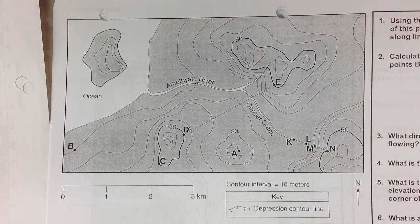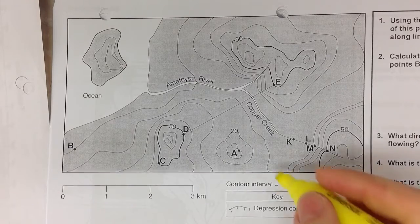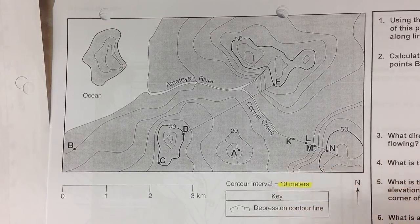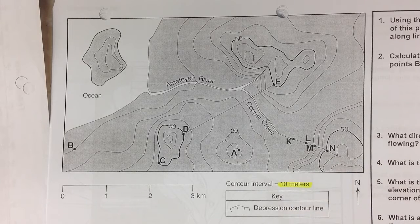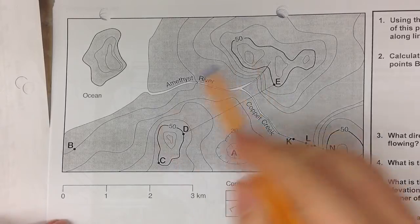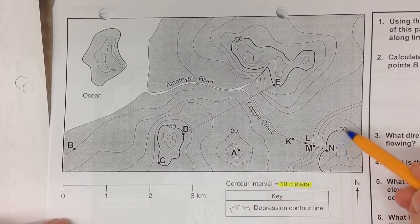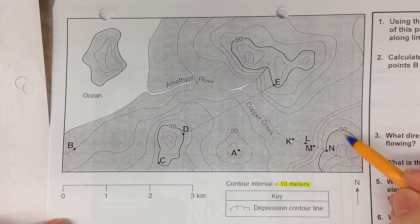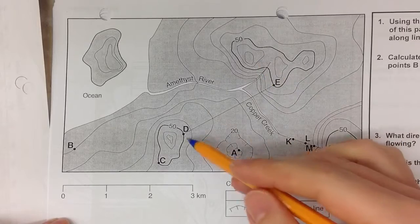The first thing you always want to make sure that you can recognize is the contour interval. Each line on the map is going to go up by 10 meters. You'll notice that some of the contour lines are darker. They represent what are called index lines and they will always have an elevation attached to them.